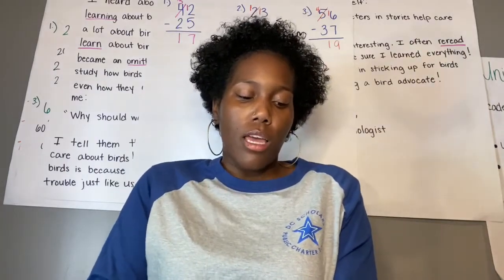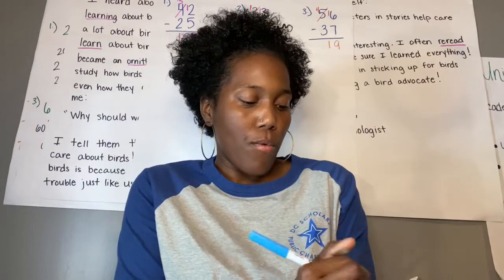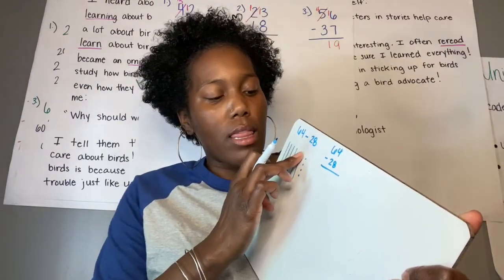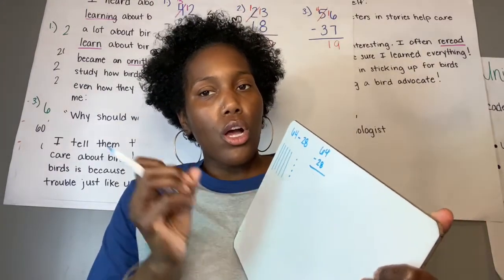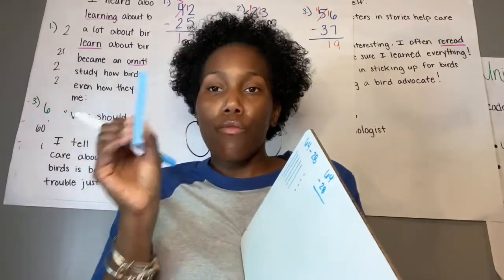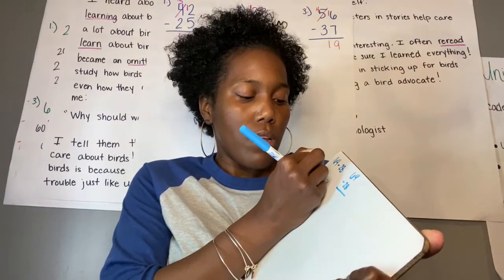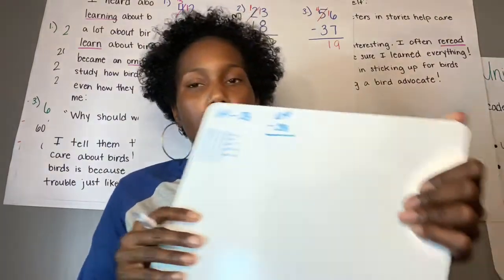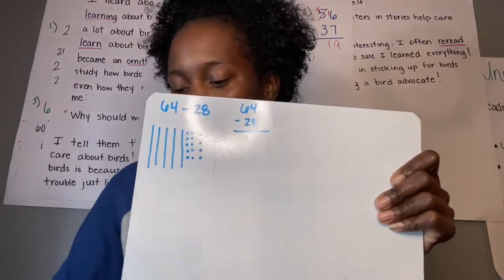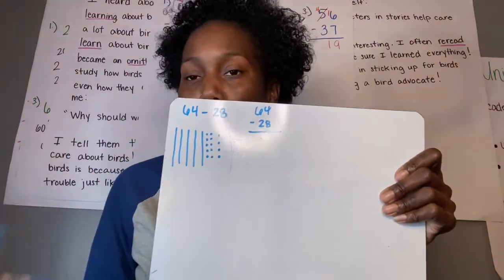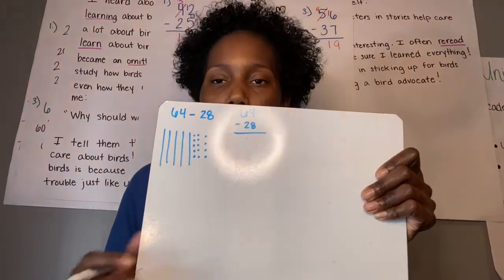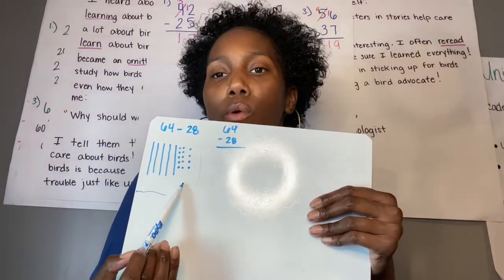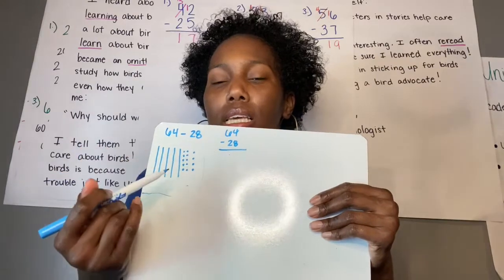Here's our picture representation of 64, and I'm going to show you what that would look like when we borrow. 64 minus 28 — what happens is I take this away and it's no longer a unit rod. It turns into 10 ones. Instead of one group of 10, it turns into 10 ones. So now we have 5 groups of 10 and 14 ones, and that's easier to subtract with.